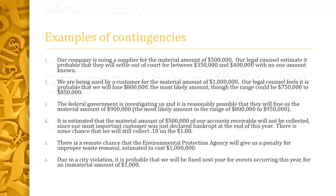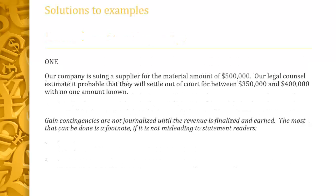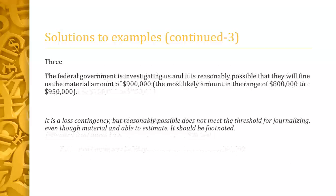Number three: the federal government is investigating, and it's reasonably possible they'll fine us a material amount of $900,000 — the most likely amount — which falls in a range of $800,000 to $950,000. It's material and we can estimate it, but it's only reasonably possible. Reasonably possible does not meet the threshold for an actual journal entry, so this is one that's likely to be footnoted with information provided on it.